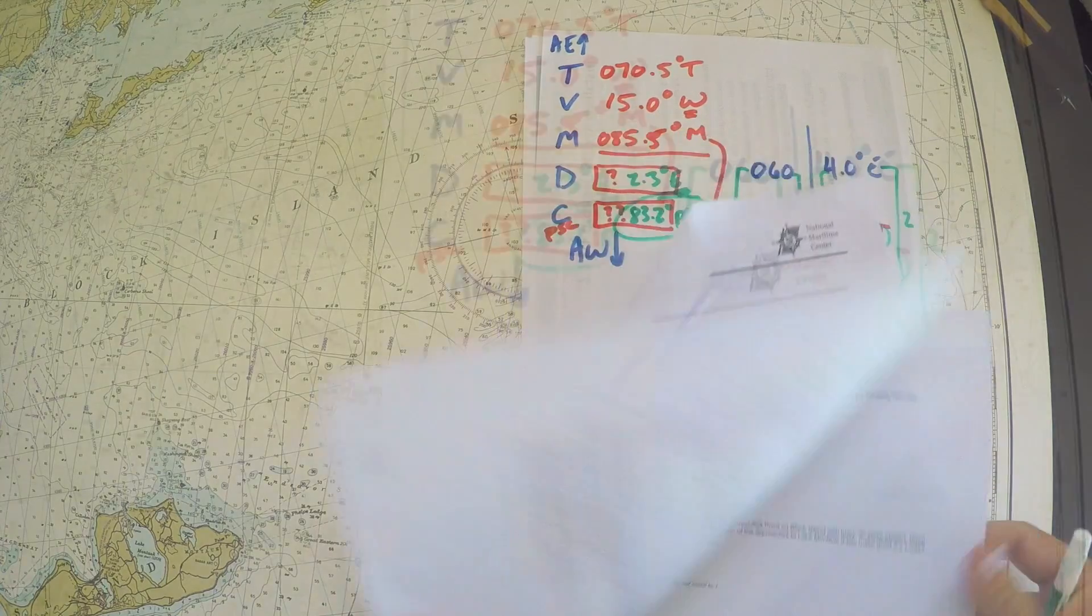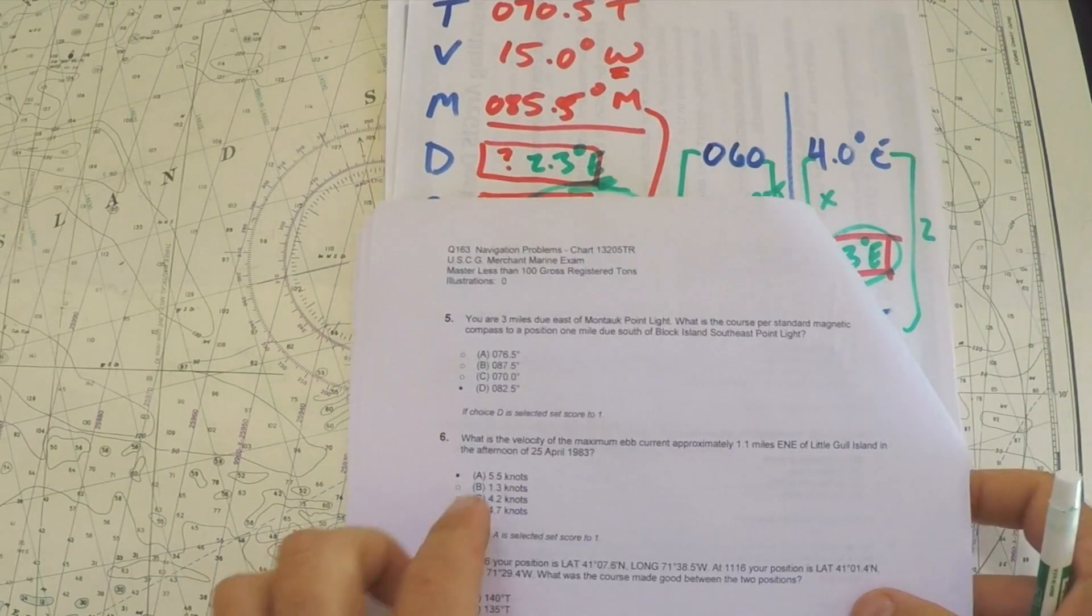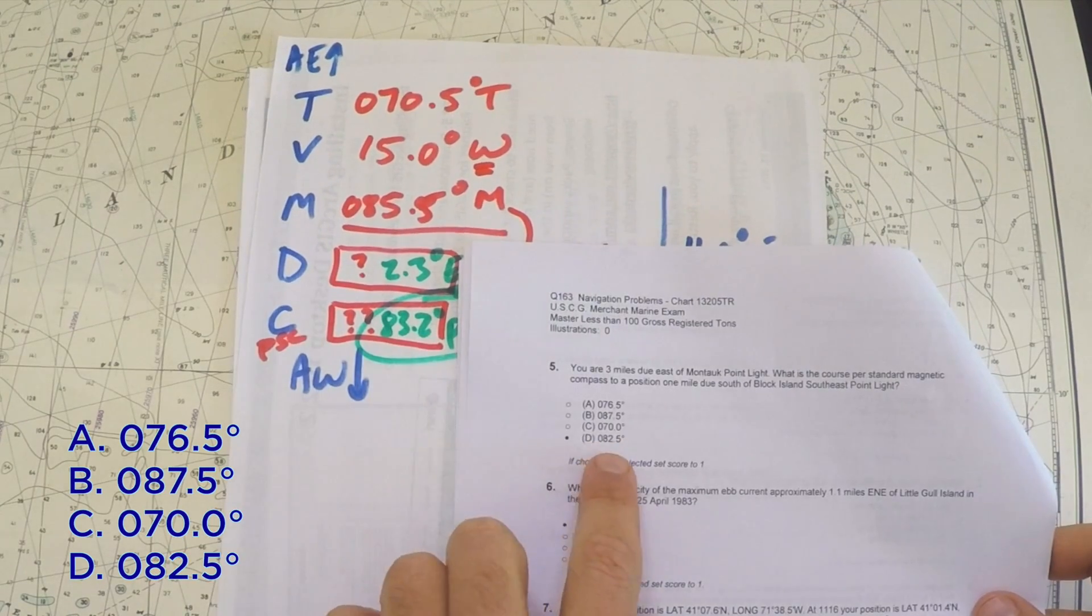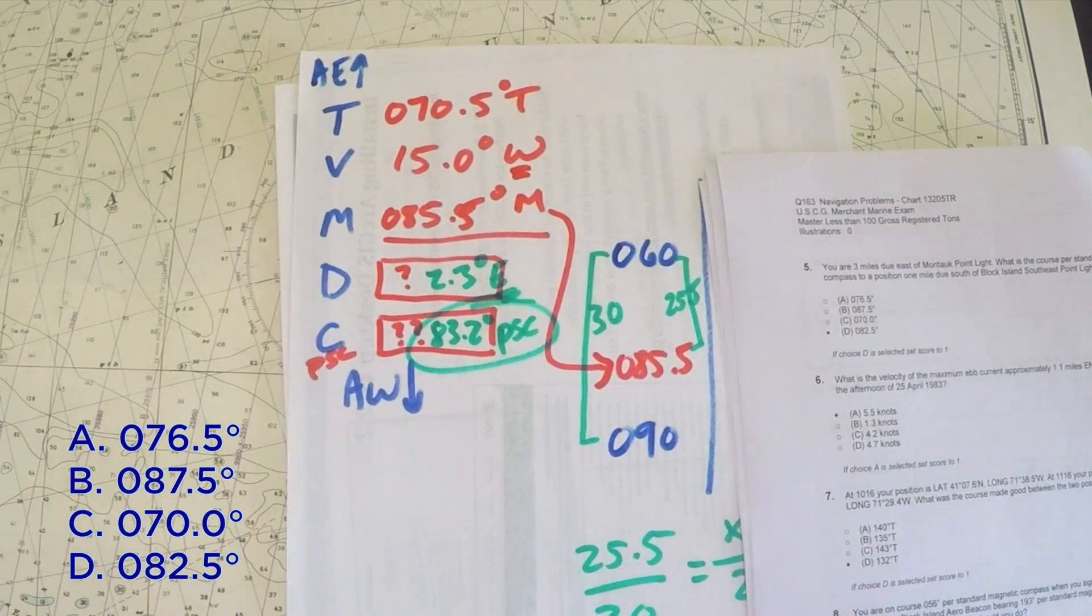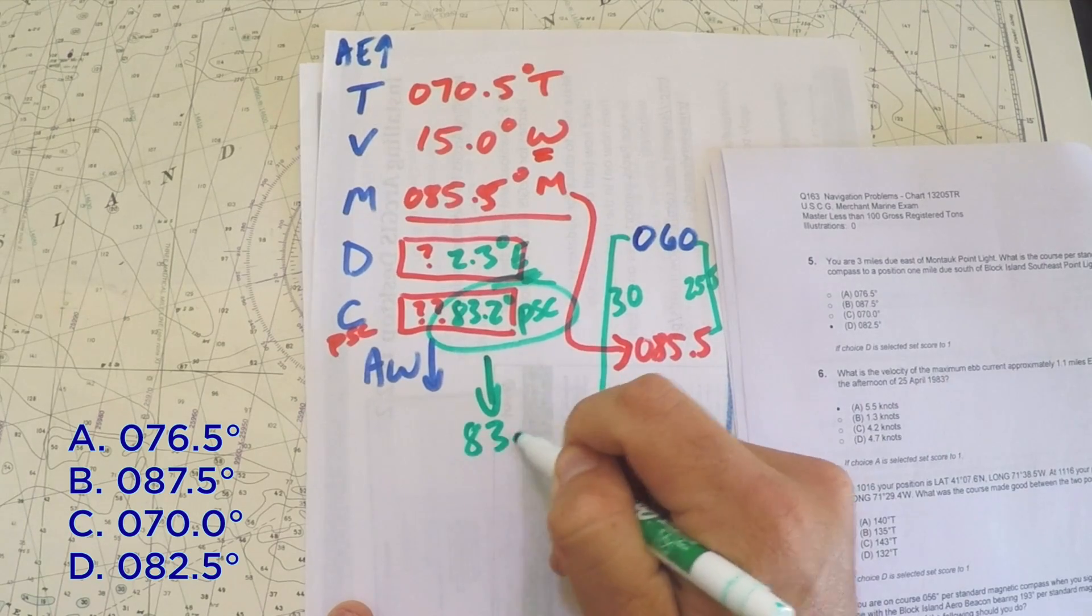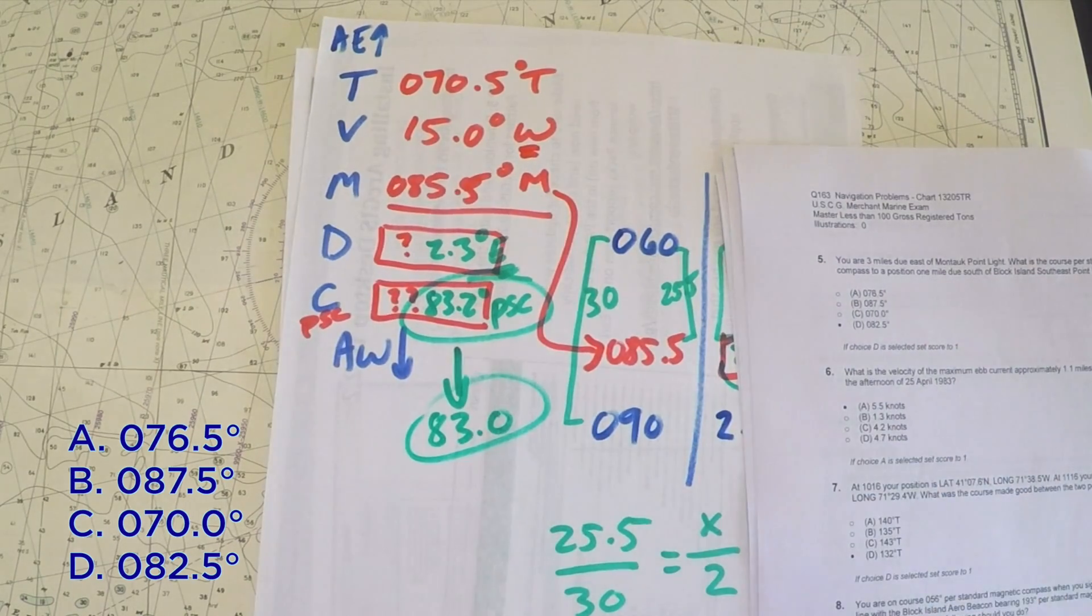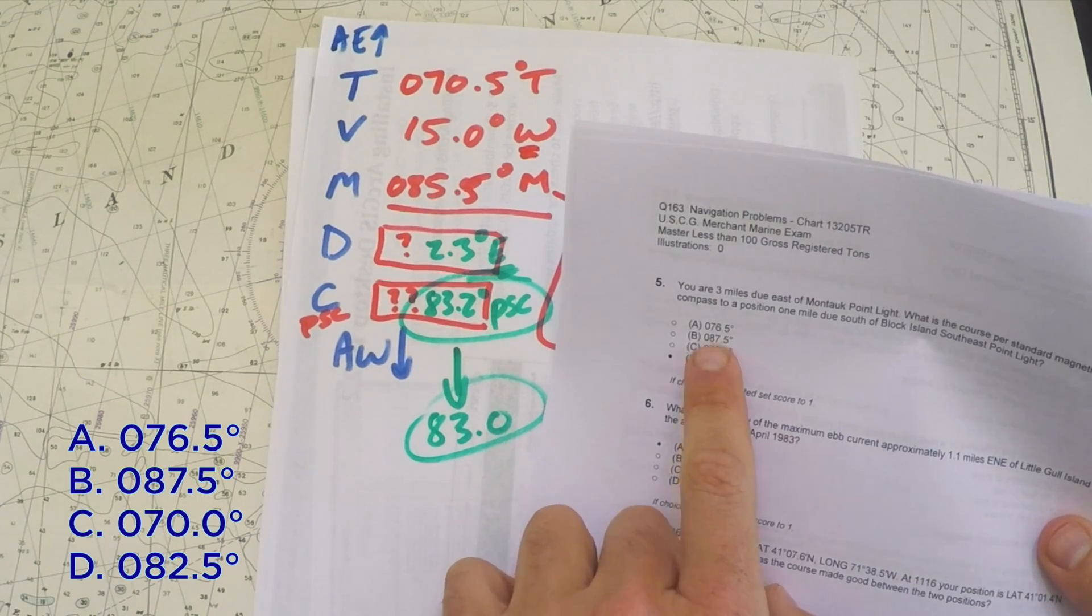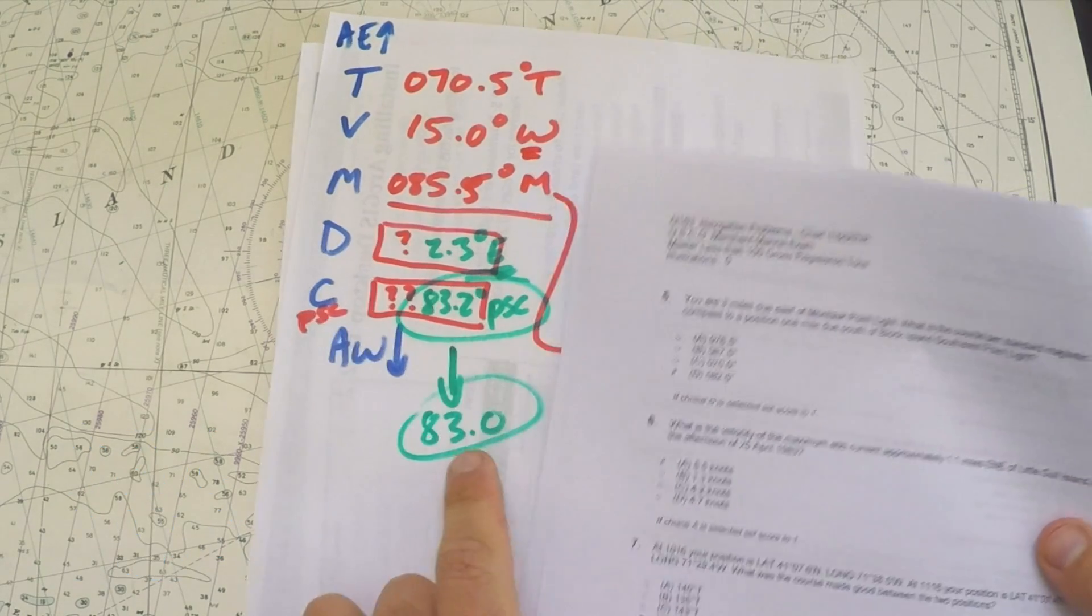If you go back into the problem and look at number five, you can see that there is no 83.2 and that everything is rounded to the nearest half. So why don't we round that to 83.0 and then look for the best answer. The closest answer is 82.5, so it would be choice D as our correct answer.